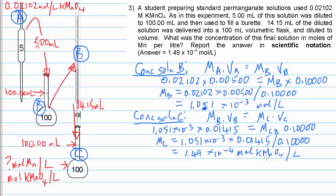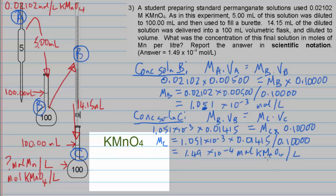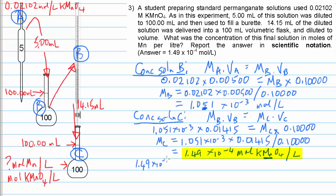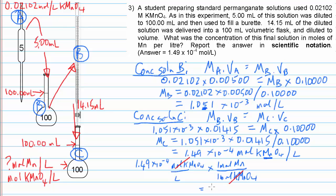We need the answer in moles of manganese per litre, but we currently have moles of potassium permanganate per litre. Looking at the formula for potassium permanganate, there is 1 mole of manganese per mole of potassium permanganate. So: 1.49 × 10⁻⁴ mol KMnO₄/L × (1 mol Mn / 1 mol KMnO₄) — the moles of potassium permanganate cancel, giving us 1.49 × 10⁻⁴ moles of manganese per litre.